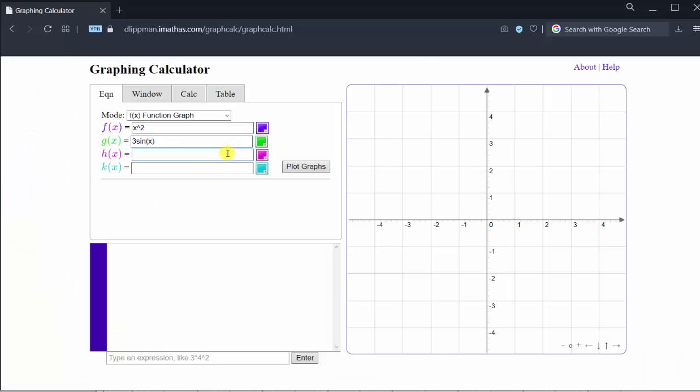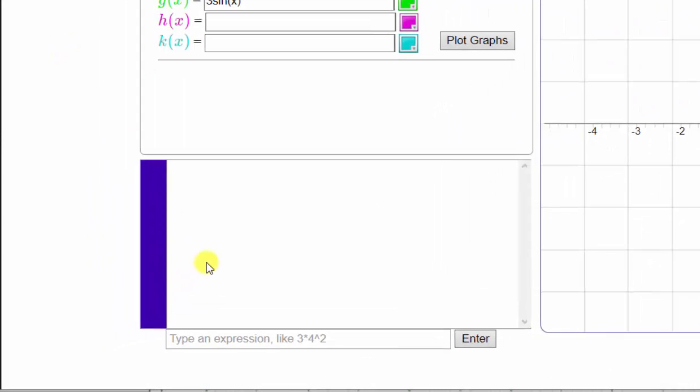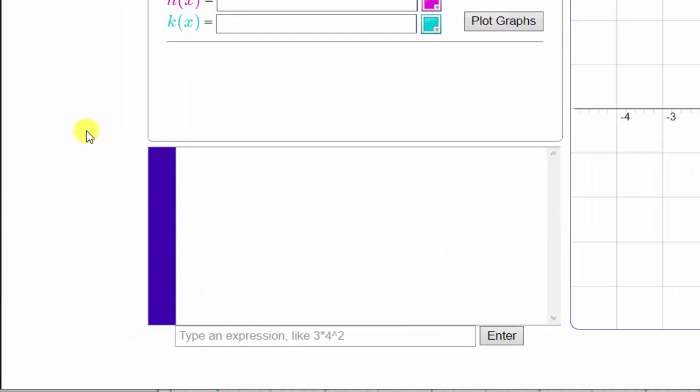This calculator does have quite a few features. We are only using the calculation part of the calculator at the bottom of the screen. So we click in the type and expression cell at the very bottom left. And we type in normalCDF, open parenthesis. Because we're looking for the probability that z is greater than 0.2, the lower bound for the z-score is 0.2 comma.